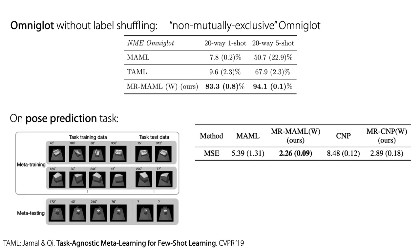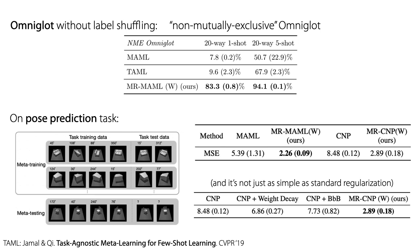On a pose prediction problem, Memo and CNP memorize the canonical orientation of the objects, preventing generalization to new objects. When using meta-regularization, these methods perform substantially better.